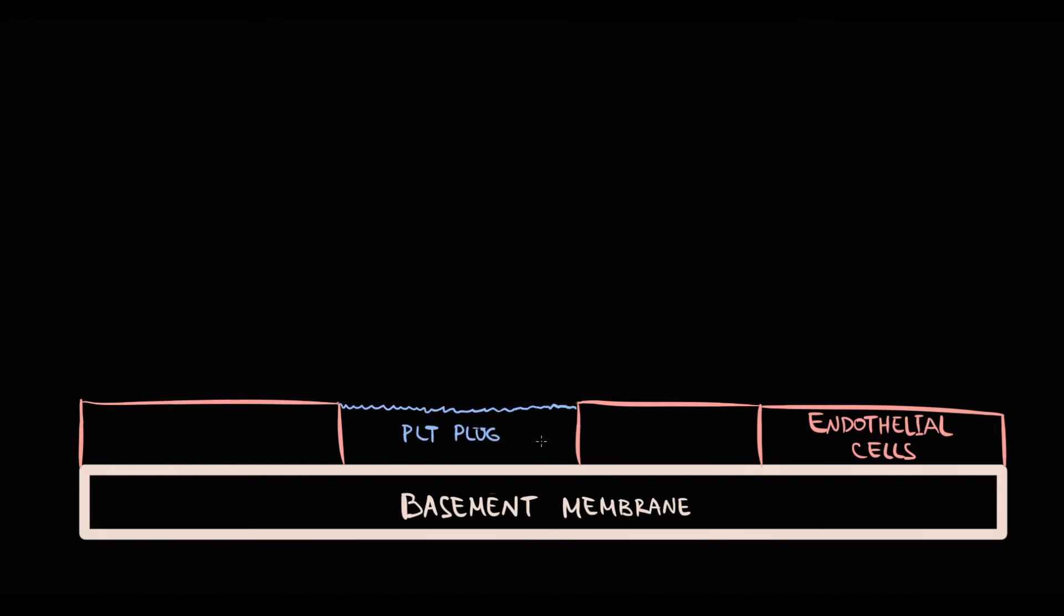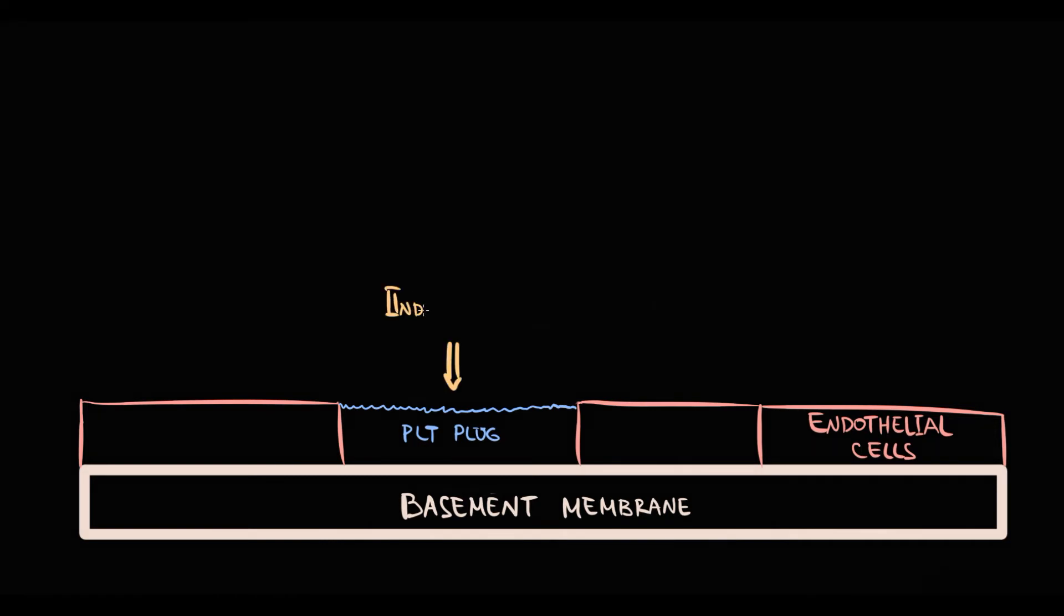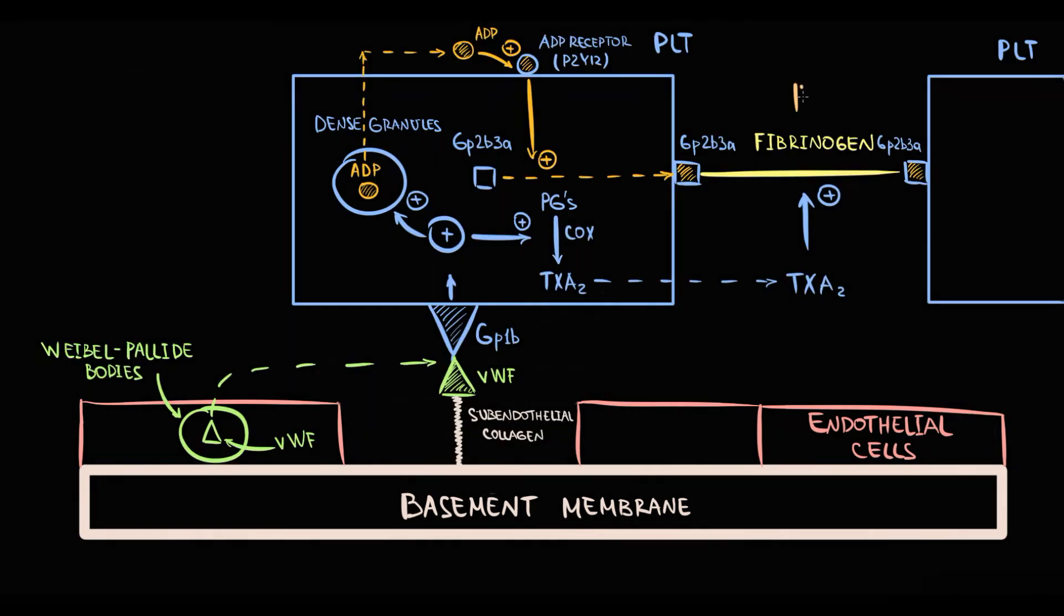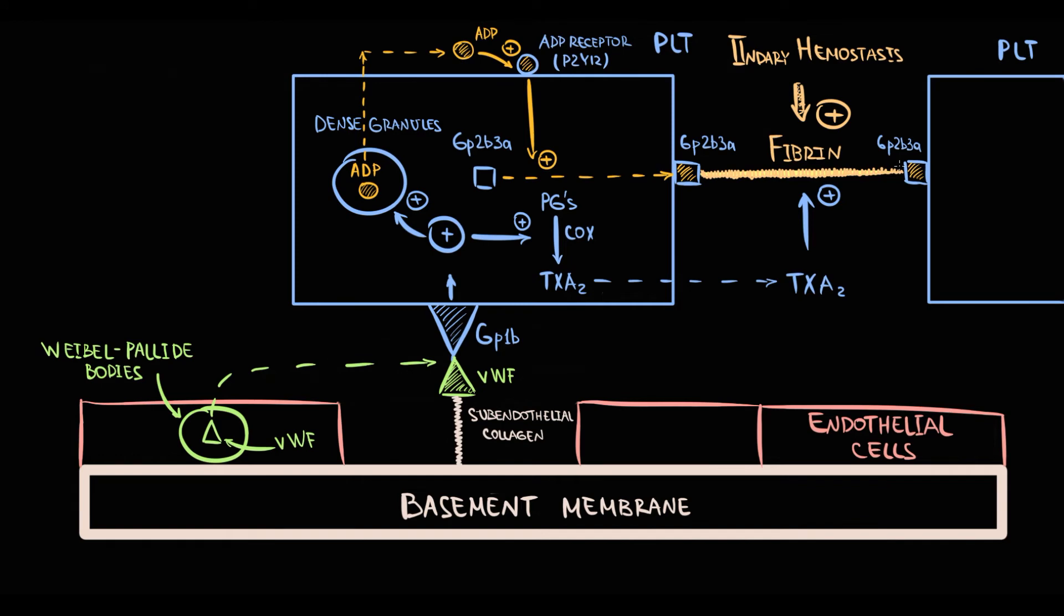And aggregation results in formation of a platelet plug. But platelet plug is weak, and to stabilize it, to make it formidable, we have secondary hemostasis. The function of the secondary hemostasis is to make from weak platelet plug a formidable structure that called thrombus. And the thing that makes this platelet plug formidable is conversion of unstable fibrinogen into stable fibrin.